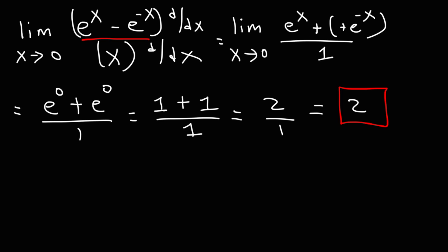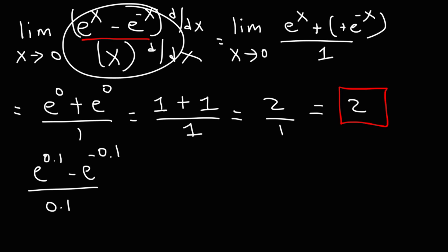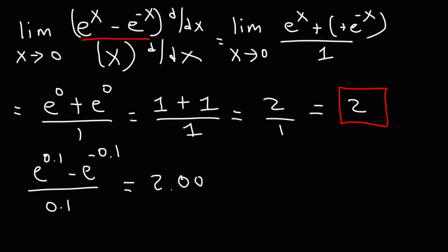So the limit as x approaches 0 of e to the x minus e to the negative x over x equals 2. To confirm our answer, let's plug in 0.1 for x into the original expression: e to the 0.1 minus e to the negative 0.1, divided by 0.1. This equals approximately 2.003335, which is very close to 2. We can see that the answer is indeed 2.